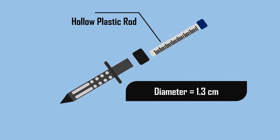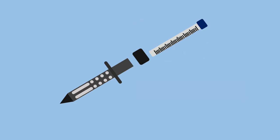A hollow plastic rod, 1.3 cm in diameter and 25 cm long, contains a graduated scale in cm with a plastic cap used to measure the values.